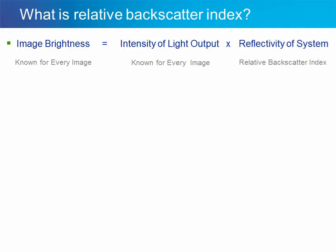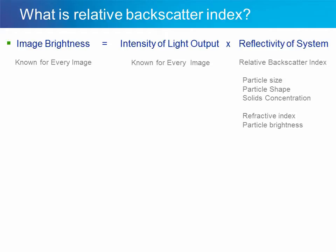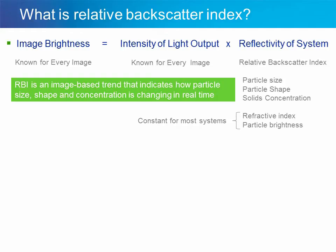The image brightness is known for every image, as is the intensity of the light output. The reflectivity of the system we call relative backscatter index. RBI is a function of particle size, particle shape, solids concentration, and the refractive index of the system as well as particle brightness. For most particle systems, refractive index and particle brightness remain constant, meaning RBI is an image-based trend that indicates how particle size, shape, and concentration is changing in real time.